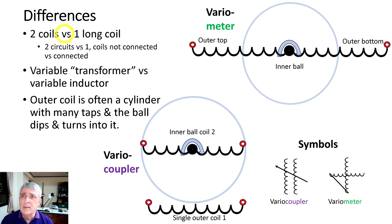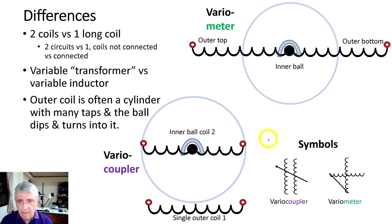So to summarize the differences: you have two coils like this versus one long coil. And the coils are connected versus not connected. It is a variable transformer versus a variable inductor. And the outer coil is oftentimes a cylinder with many taps in it, as we saw in the earlier picture. So there's the difference in the two symbols. And lastly, I put together a table.